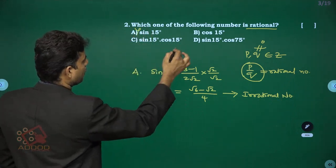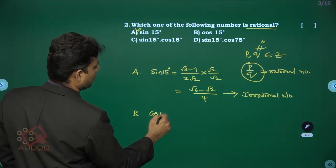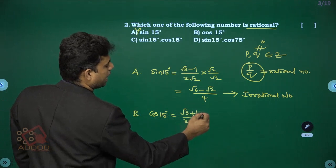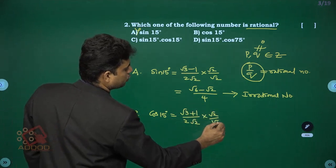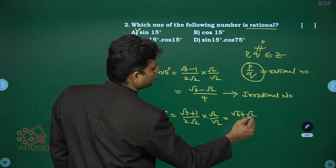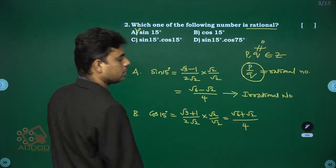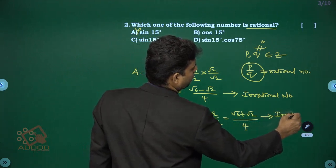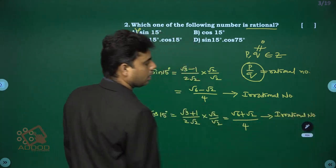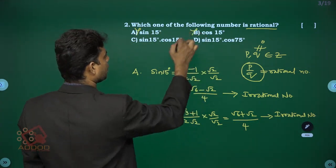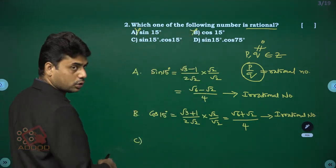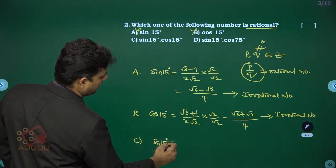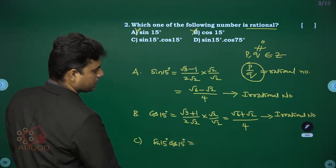Option B: cos 15° = (√3 + 1)/(2√2). Multiplying by √2/√2 gives (√6 + √2)/4, which is also irrational.